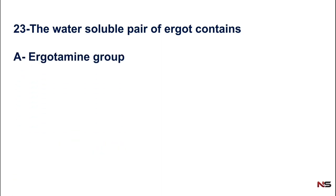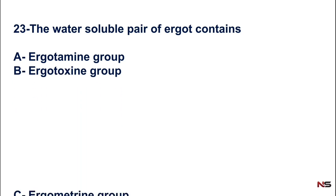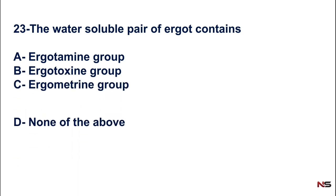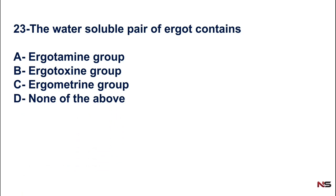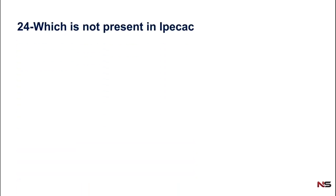Next question: What is the water-soluble part of ergot? Options include the ergotamine group, ergotoxin group, ergometrine group, and none of the above. The correct answer is the ergometrine group — option C. The ergometrine group is the water-soluble group in ergot.